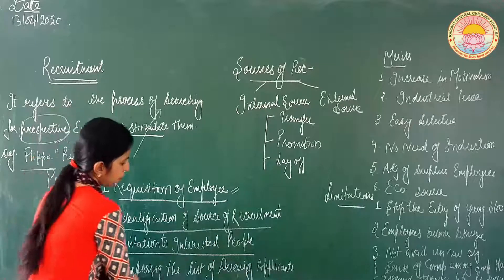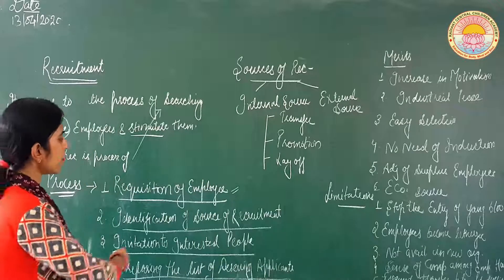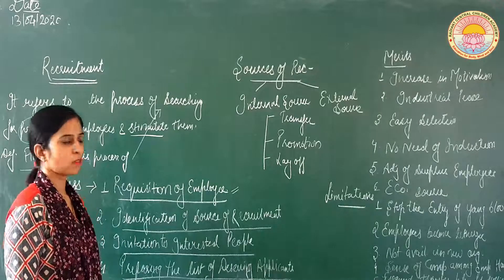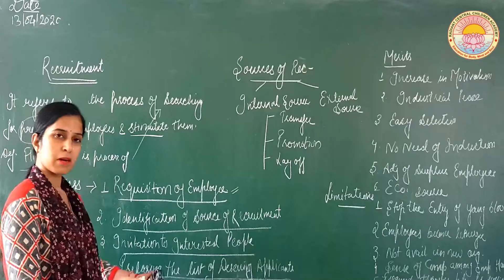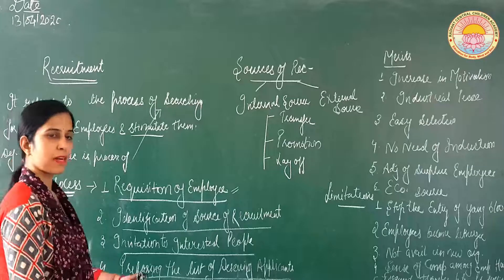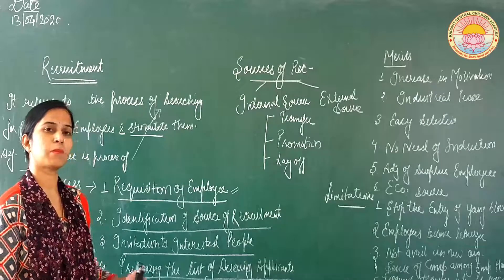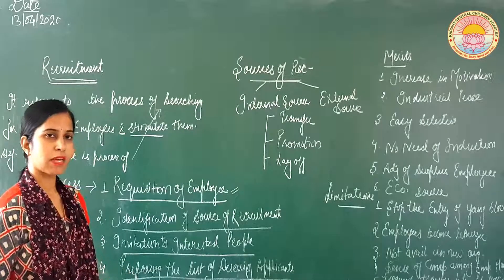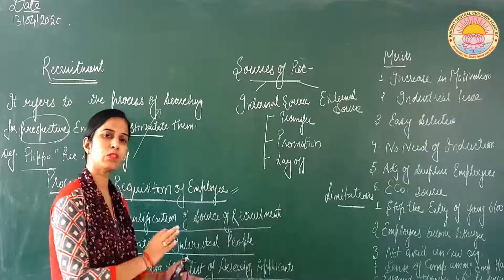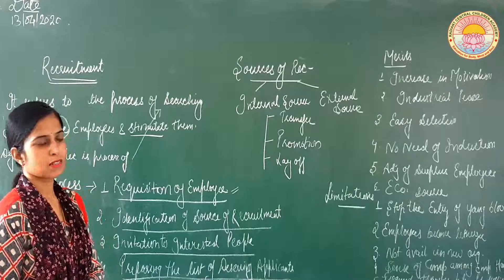Phir fourth hai: preparing the list of deserving applicants. Jab number of people hamari organization mein apply karenge job ke liye, toh hamein kya karna hai — ab hamein do partition kar dene hain. Ek toh woh jine employees ki qualification aur hamare criteria se match karti ho — jo deserving hain, jo hamari organization mein deserve karte hain — unki list alag, aur jo nahi deserve karte, unke liye alag list.